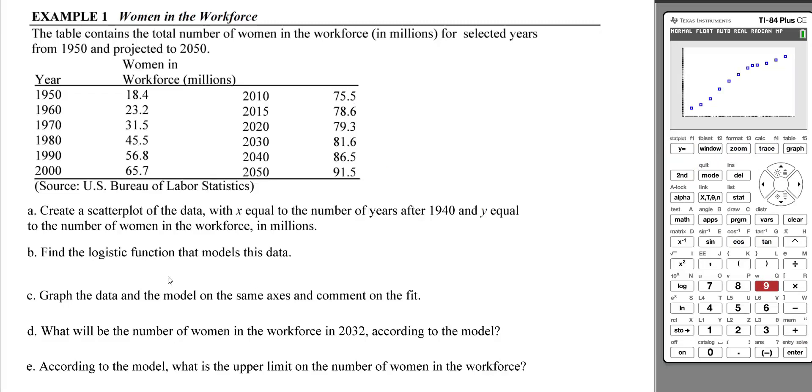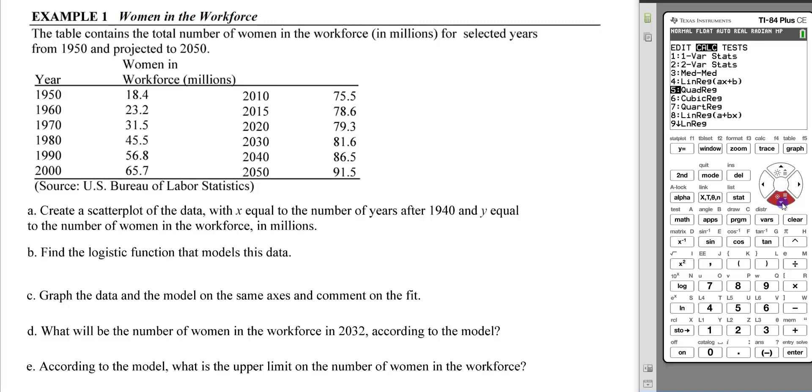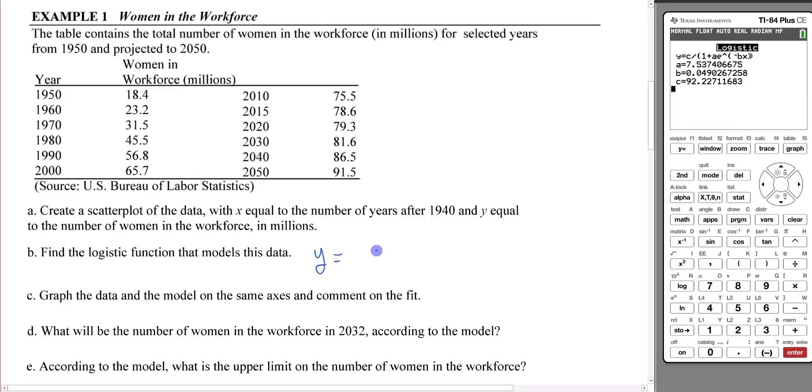Now we want to find a logistic function that models the data. In the stat menu under calculate, go down to logistic and it automatically pulls from list 1 and list 2. We have y = 92.227/(1 + 7.537e^(-0.049x)).